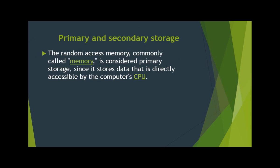Also, hard drives are not as fast as random access memory, which means they cannot transfer data as quickly. However, unlike RAM, hard drives retain data when the computer is turned off. This is because hard drives store data magnetically, while RAM requires an electrical current.